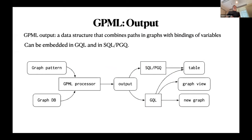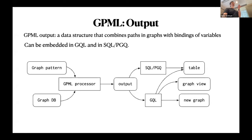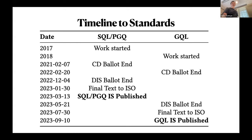The output of the pattern language is a fairly complicated data structure that combines paths and graphs with bindings of variables. The question is how you interpret that output. When embedded in SQL/PGQ it falls back to relational — it has to be interpreted as a table outputting particular columns from the match. In GQL there are multiple possible interpretations: as a table, as a view of a graph, or as a new graph you build. The timeline for the standard was stated in the SIGMOD paper, but as mentioned, these dates are always guaranteed to slip.